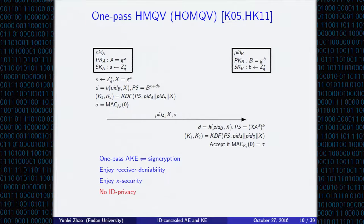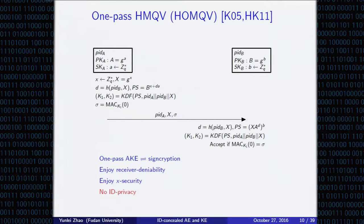Now consider one-pass HMQV. The situation is improved with HMQV: it enjoys receiver deniability and KCI security. But still, HMQV does not consider ID privacy. And it was shown that one-pass authenticated key exchange can be transformed into a signcryption scheme and vice versa.